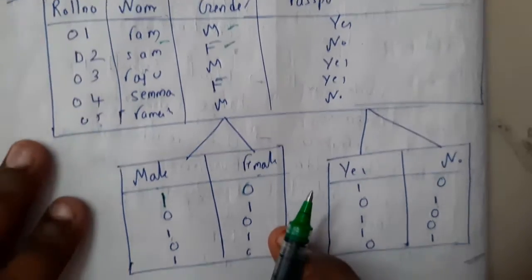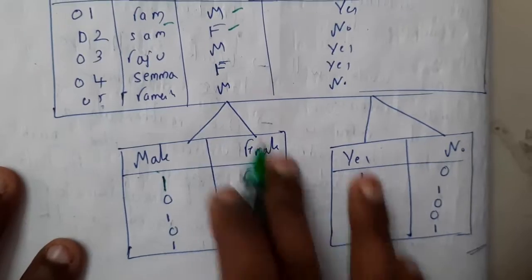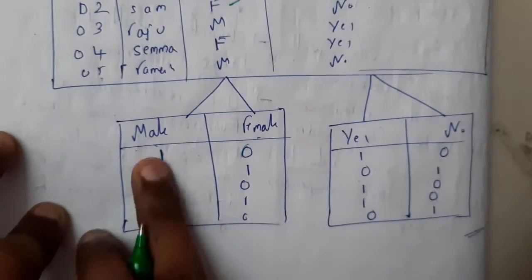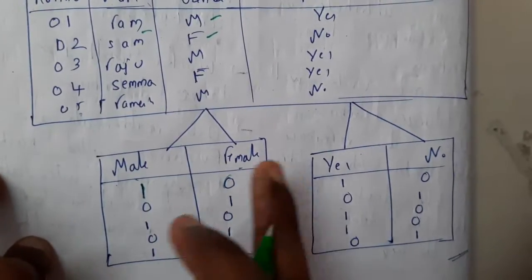That is the reason we'll be using these bitmaps. Whenever you write a query, it will be really efficient to get it in this way. Wherever it is male, we'll be inserting one, and if this person is female, we'll be writing it here.